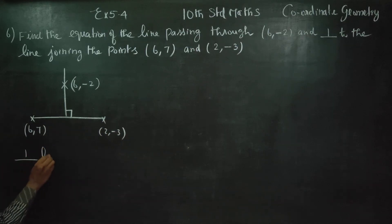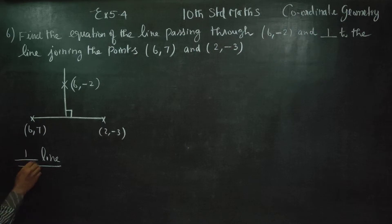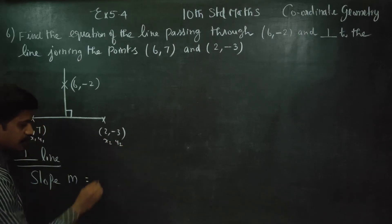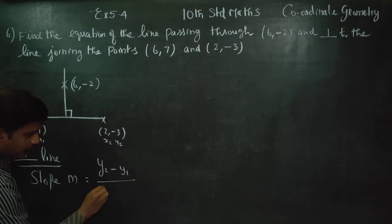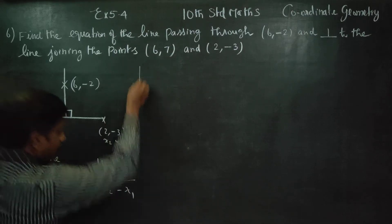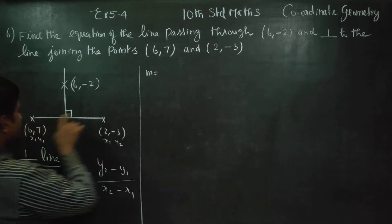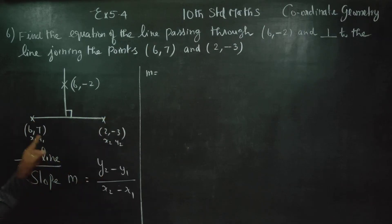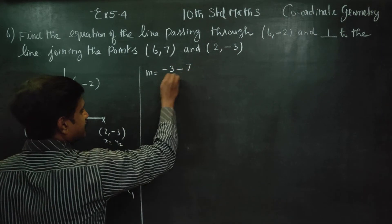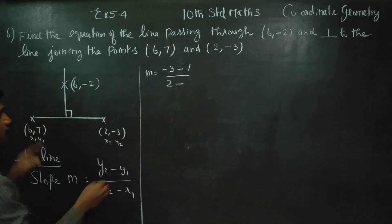Perpendicular to the line — it is slope. Using the two-point formula: slope = (y2 - y1) / (x2 - x1). So slope equals y2 minus y1, which is 7 minus (-3), and x2 minus x1, which is 2 minus 6.